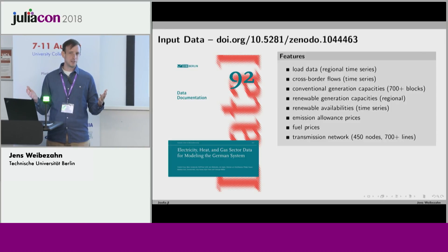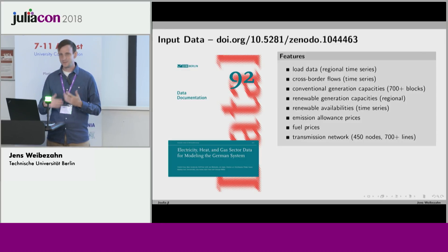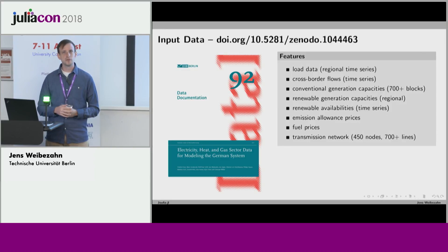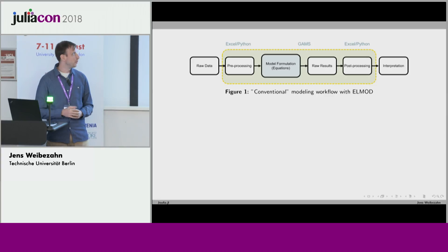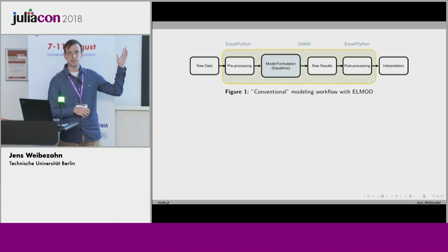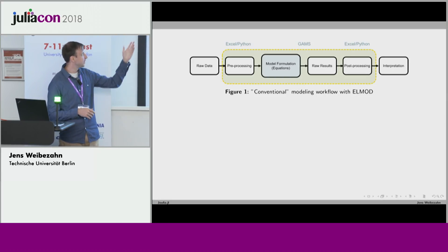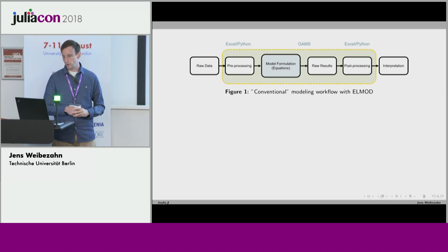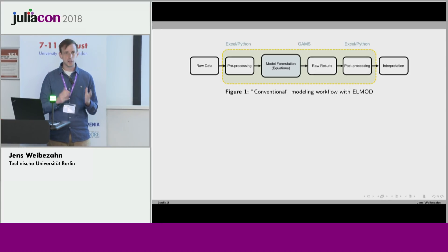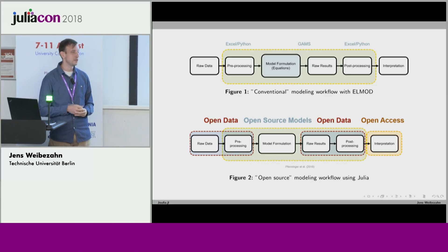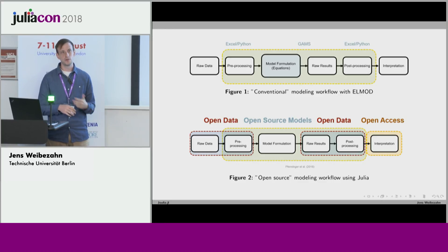So we could say everything is already open — but what's missing is that we're not using an open source modeling language. This is why about two years ago, when we heard about Julia, we thought about moving there. Before that, our conventional modeling workflow used Excel and/or Python for data pre-processing, then GAMS for model formulation, sending to the solver, getting raw results back, and post-processing again in Excel or Python. We had breaks between software. With Julia, a major advantage is that we can do this entire workflow within the same language without any switches, and automate many things.